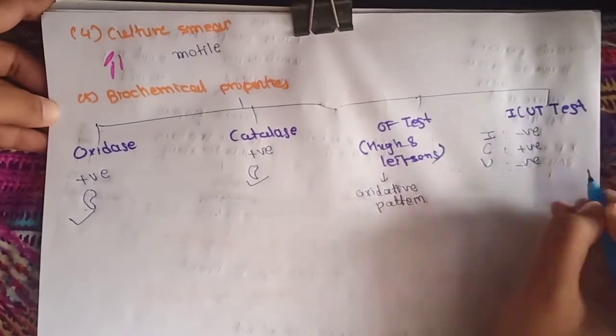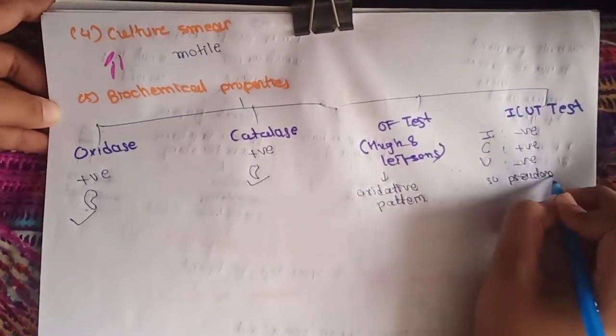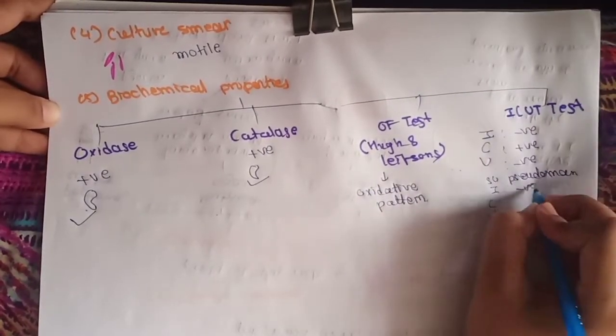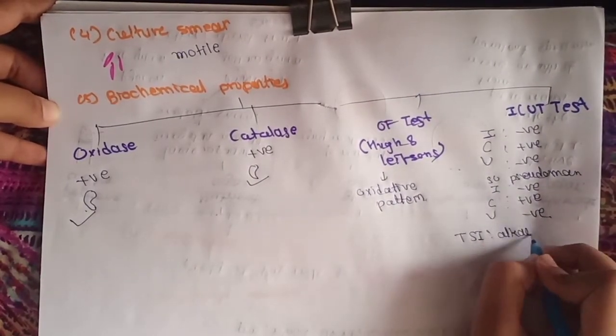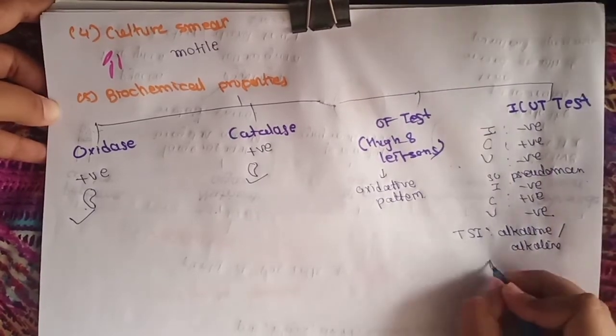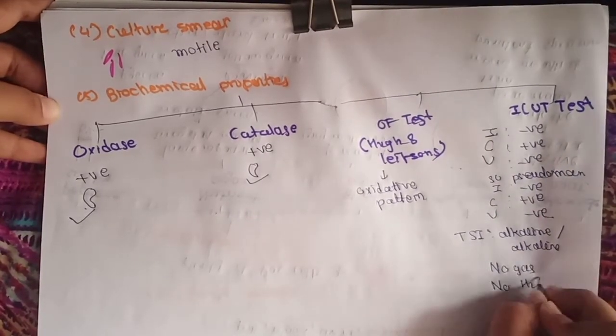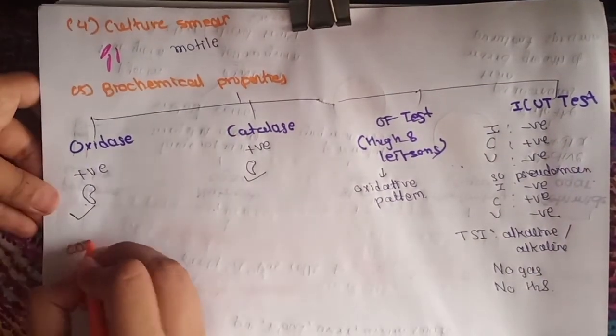Pseudomonas is indole-negative, citrate positive, urease negative. So Pseudomonas is negative, positive, and negative. Triple sugar iron test will give alkaline slant and alkaline butt with no gas and no H2S.